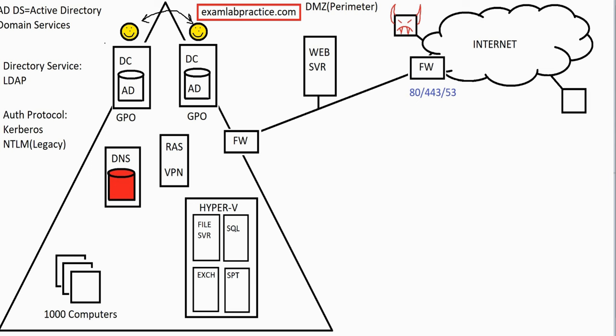With virtualization comes the concept of elasticity, which means each virtual machine can be given a certain amount of RAM and processing power. If one server isn't using all of its allocated RAM, it can share it with other servers. For example, if the file server has been given more RAM than it needs and SQL needs that RAM, the file server can give some up. When SQL is done, the memory is released back into a shared pool of RAM and CPU that can grow and shrink as needed.